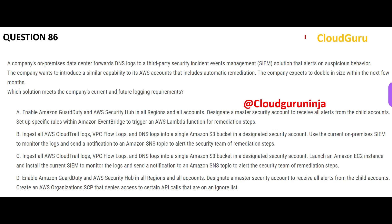For the next question: in the on-premises world they have DNS logs, they send those logs to a SIEM to understand suspicious behavior and get alerts. Now they are moving to AWS, and we want to know which services to use to mimic that same feature. Additionally, they want to add automatic remediation, which was not present in the on-premises world.